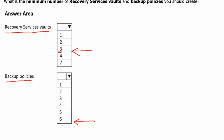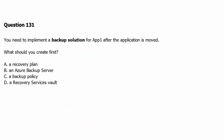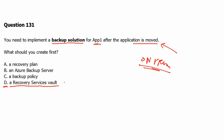Moving to Question 131: you need to implement a backup solution for App 1 after the application is moved from on-premises. What should you create first? For a backup solution, a recovery service vault must be in place first — without it, no backup actions can be taken. A backup policy comes after. A backup server and a recovery plan are not needed to start backup services. Therefore, option D — a recovery service vault — is the correct answer.